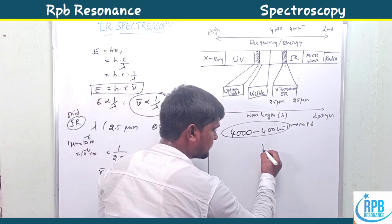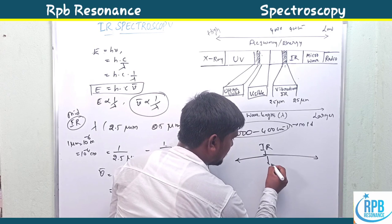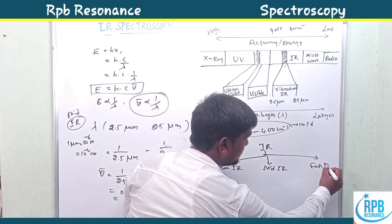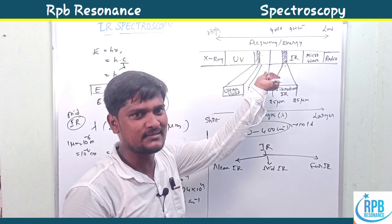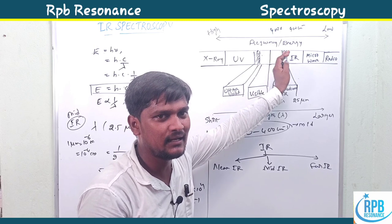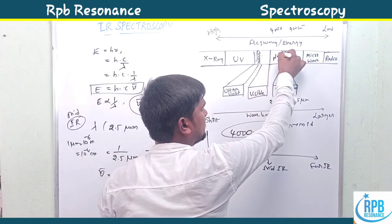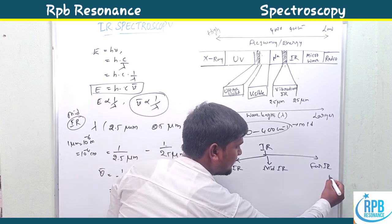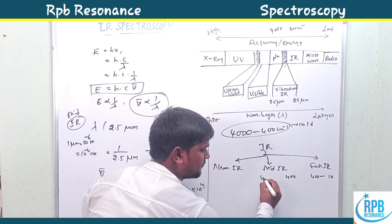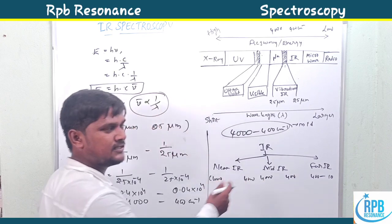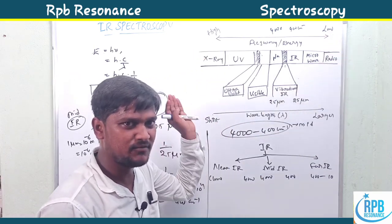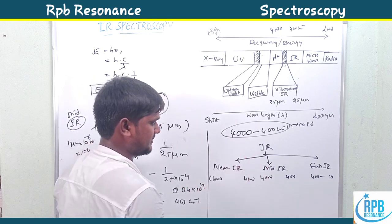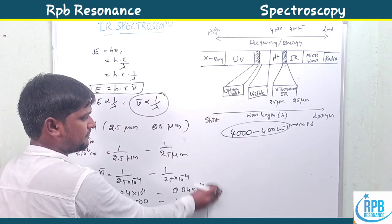IR is classified into three types: near IR, mid IR, and far IR. The near IR region is nearer to the UV-visible spectroscopy. The mid-IR is the typical represented region. The far IR region is 10 to 400 cm⁻¹. The mid-IR range is 400 to 4000 cm⁻¹, and near IR is 4000 to 14000 cm⁻¹. From left to right, energy decreases but wavelength increases. This is the simplest classification of IR into near IR, mid IR, and far IR.